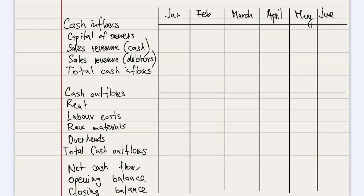What I suggest is to cross out the lines where we have headings, so that it doesn't tempt us to put any information inside that part. Now we can put in the first numbers. We know that the starting capital was $3,000, so we put that as the capital injection in January.